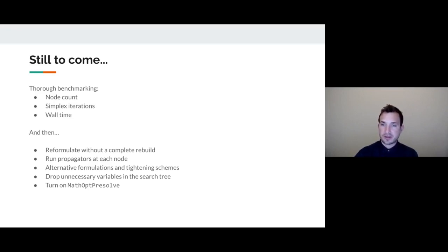Once this benchmarking is out of the way there's a bunch of things that we want to add on top. We want to be able to reformulate inside the tree without doing a complete rebuild, to take advantage of the problem modification that's available in MathOptInterface. We want to be able to run propagators at each node to compute tighter bounds and then compute tighter formulations. We want to explore alternative formulations and different tightening schemes. Potentially we want to be able to drop unnecessary variables as we go deeper into the search tree and we want to turn on the pre-solve routines available in MathOptPresolve.